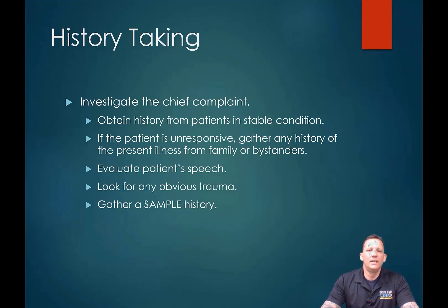A ruptured aneurysm is just an unlucky event and doesn't have to do with high blood pressure. But somebody in their 60s or 70s with chronic blood pressure problems — atrial fibrillation is one of the bigger triggers — all these little pieces of history will tell you what caused today's event.